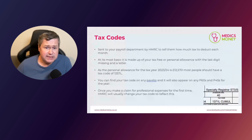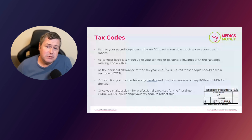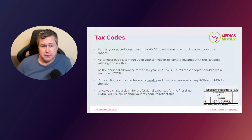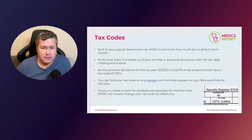This is also why some first-year FY1 doctors who start in August don't pay tax initially — they have some personal allowance to use up from April to August. You should be able to find your tax code on any payslip, P60 or P45 that you receive. You may also get a document from HMRC called Form P2, which gives a breakdown of your tax code. You can also find it online via your personal tax account.